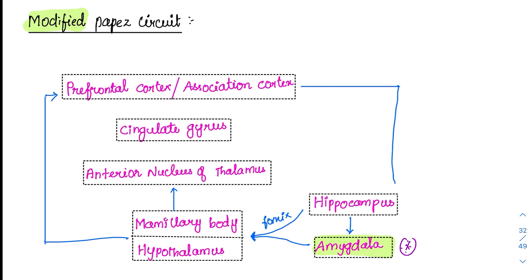This last connection can go to and fro. From the hippocampus, it also goes to the prefrontal cortex directly, and from the prefrontal cortex it can go back to the hippocampus. So this is the outer circuit.